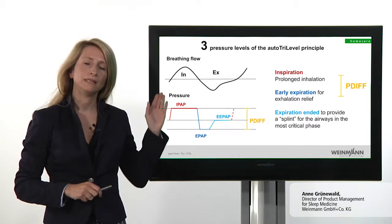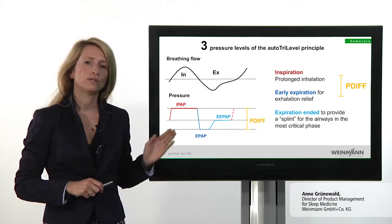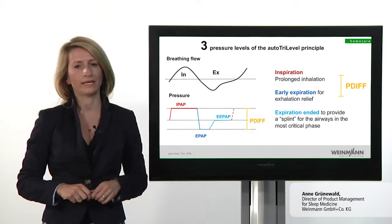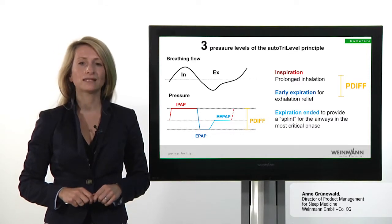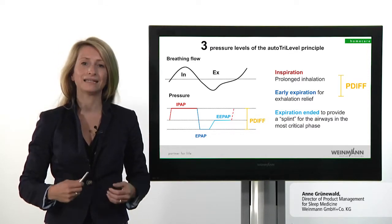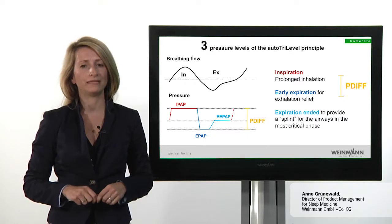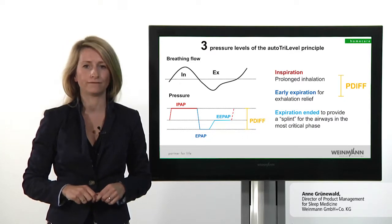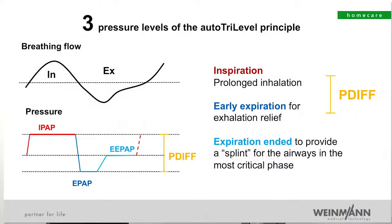The auto-tri-level principle includes the classic bi-level pressure levels: IPAP during inspiration and EPAP during expiration. We refer to the difference between these two pressure levels — that is the actual change in pressure — as the PDIF.